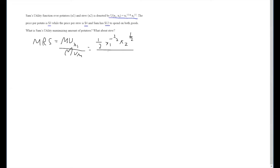Additionally, we must find the marginal utility of good 2. That's 1 half x1 to the 1 half times x2 to the negative 1 half.